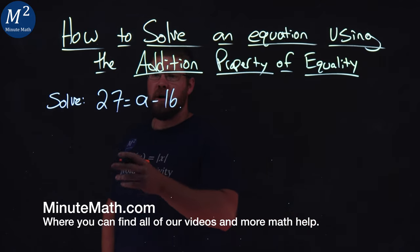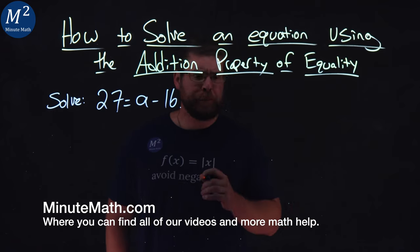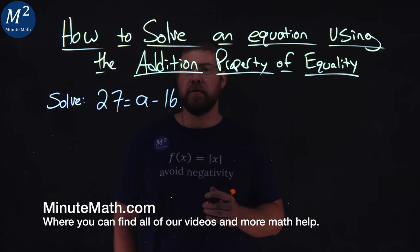We're given this problem here. Solve 27 equals a minus 16, and we're going to use the addition property of equality to do so.